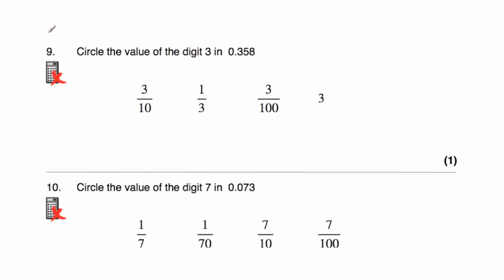Question number 9 says circle the value of the digit 3 in the number 0.358. So we've got our units, then our decimal point, then our tenths, our hundredths, and our thousandths. So we've got 3 tenths. We need to circle 3 tenths — and there's 3 tenths.